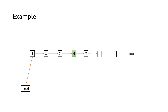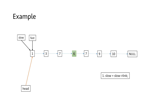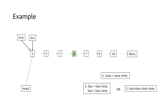Let's take two pointers and name one pointer as slow and the other one as fast. We have named them slow and fast on purpose because the slow pointer will be moving one node at a time, and the fast pointer will be moving at a pace of two nodes at a time. For the slow pointer we'll make it the link of the current node, and for the fast pointer we'll make it the link of the link of the current node.